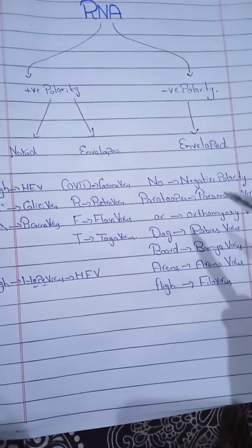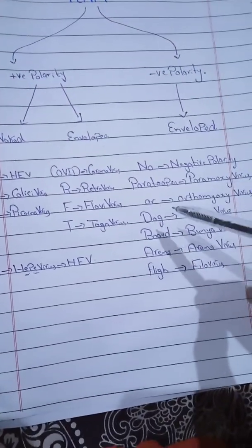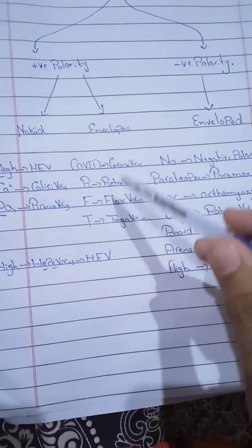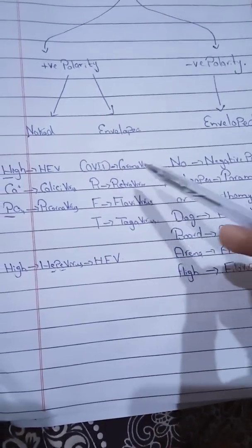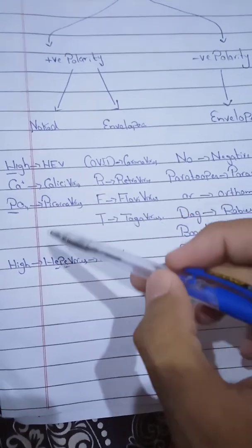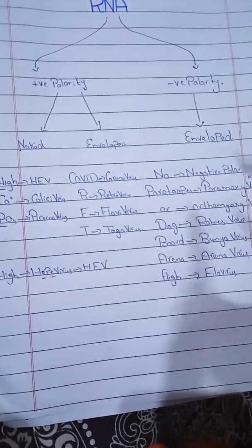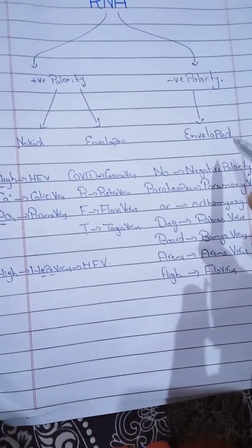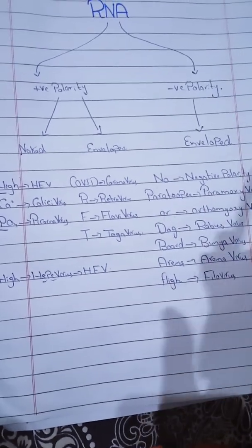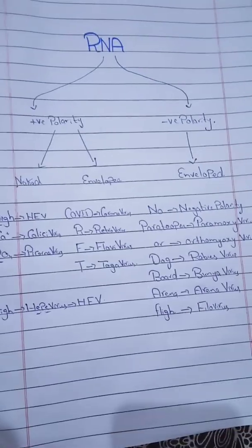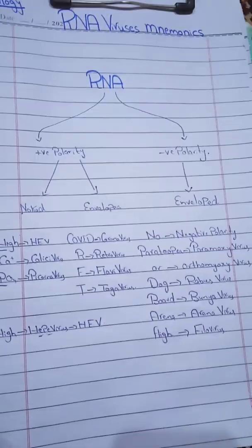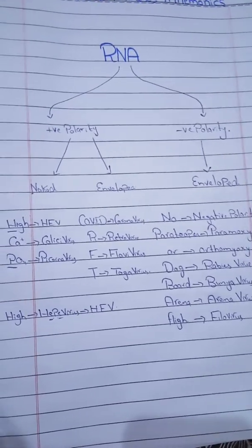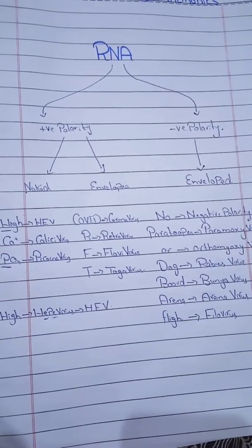So students, here is the complete summary: 'No Para Tupper Or Dog Board Ariana Flight' for negative polarity enveloped viruses; 'COVID RFT' for positive polarity enveloped viruses; and 'High Calcium Phosphate' for positive polarity naked viruses. Please like and subscribe to our channel — I love you!